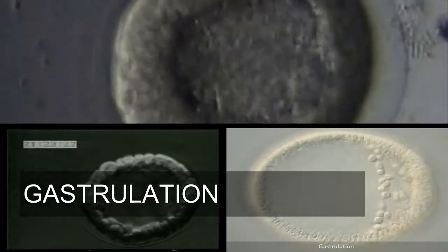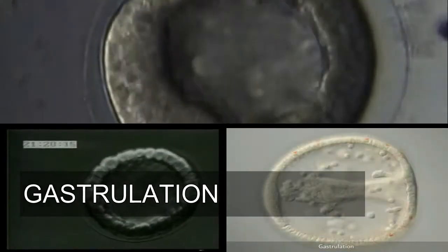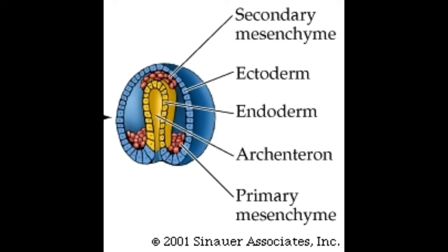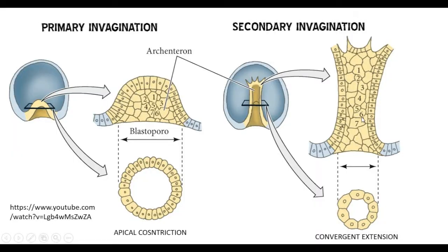These are the processes of gastrulation in typical sea urchin. Gastrulation is the most prominent morphogenetic event in early development, resulting in the formation of three germ layers: the ectoderm, the mesoderm, and the endoderm. In sea urchins, it has two distinct phases: the primary invagination and the secondary invagination.